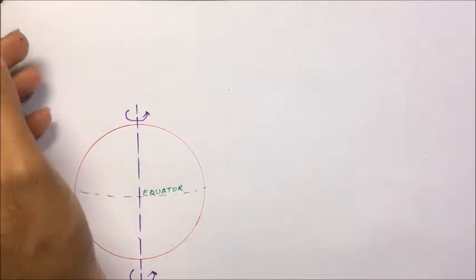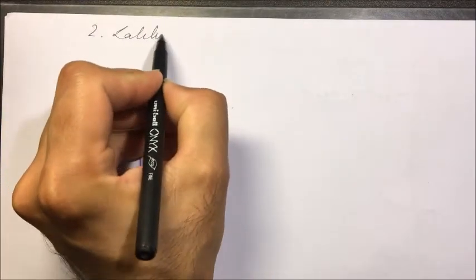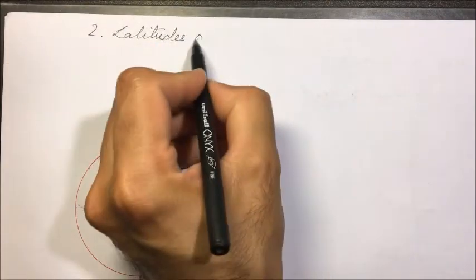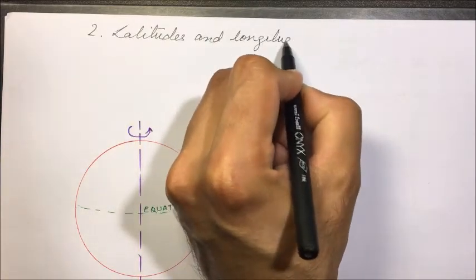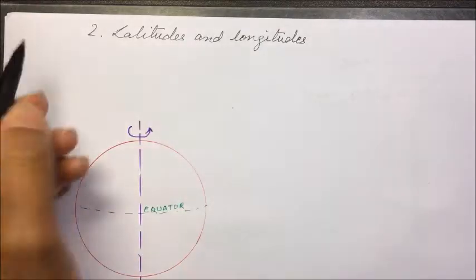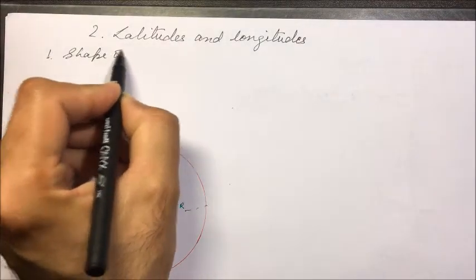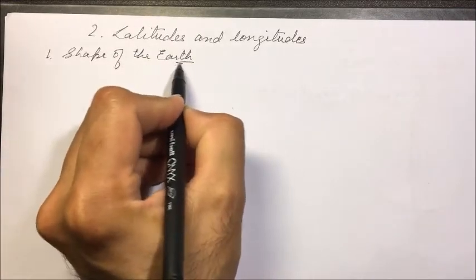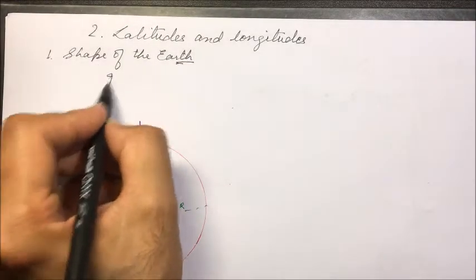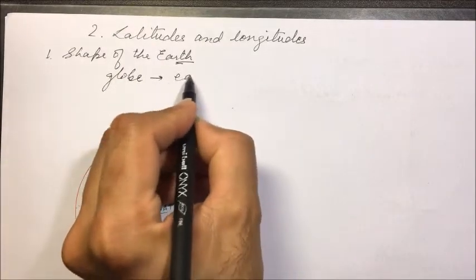Hello everyone. Today in Geography we will be starting with the second chapter: Latitudes and Longitudes. First, we will be discussing the shape of the earth. As you all know, a globe represents the earth's spherical shape.